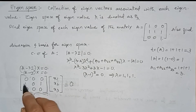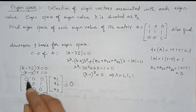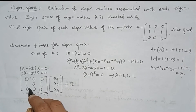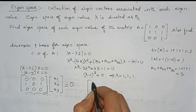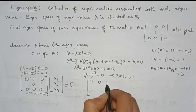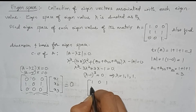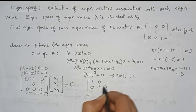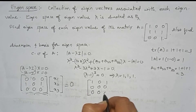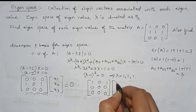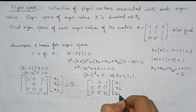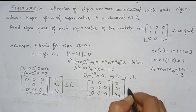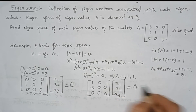The matrix is already nearly reduced — just interchange the first and second rows. After row interchange, we get the row echelon form with rows [1, 0, 1], [0, 0, 0], [0, 0, 0], applied to (x1, x2, x3) equals 0.